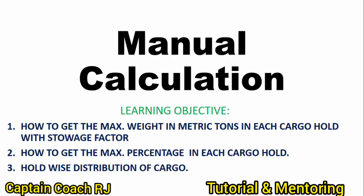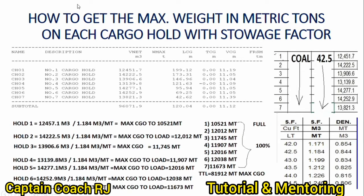Let's move on. As you'll notice, I'm pulling up the details of the cargo hold. Cargo holds number one to seven — we focus only on the net volume in cubic meters. This is the full capacity of each cargo hold: one, two, three, four, five, six, seven. We also have the LCG and TCG, which you will use when loading grain cargo, but for now we will not discuss LCG and VCG details.